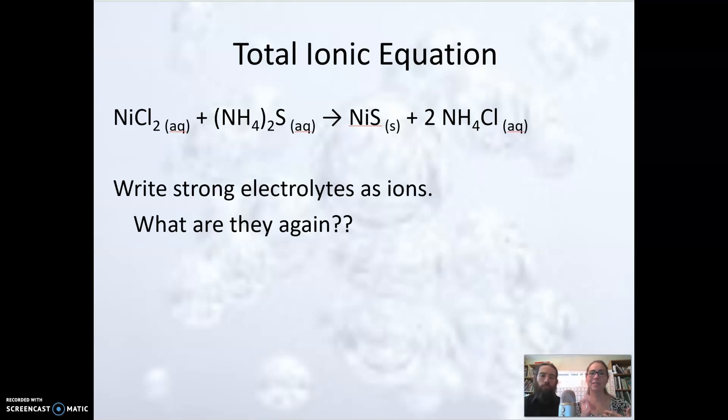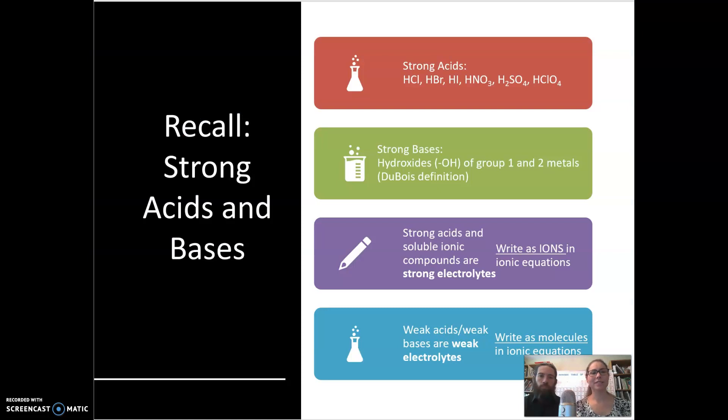To be able to produce the total ionic equation you need to break apart the strong electrolytes as ions. So what are those strong electrolytes again? Strong electrolytes are soluble ionic compounds and strong acids. You're going to determine from your solubility table of ionic compounds and your strong acids are the six strong acids up here. So you really probably want to memorize those six.